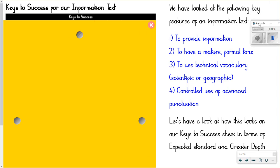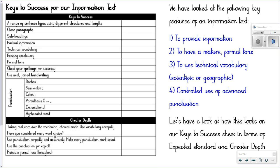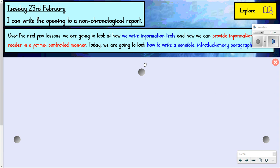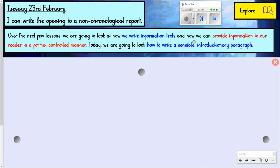So we've looked at the features of an information text — of a non-chronological report. Here on the side are all the different features that we'll look to use as we get to our final piece. Basically: they're designed to provide information; they should have a mature and formal tone; they should use technical vocabulary; and they should have a controlled use of punctuation. All of that is included in our key success criteria that we'll come back to at the end of the unit. Over the next few lessons, we're going to look at how we write information texts and how we can provide information to our reader in a formal, controlled manner.